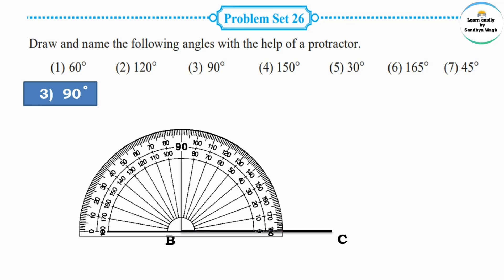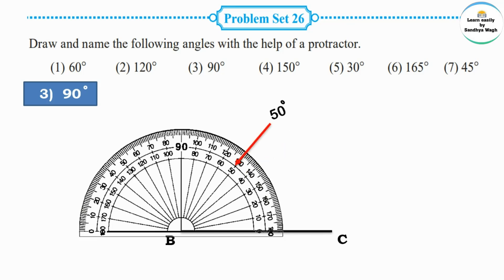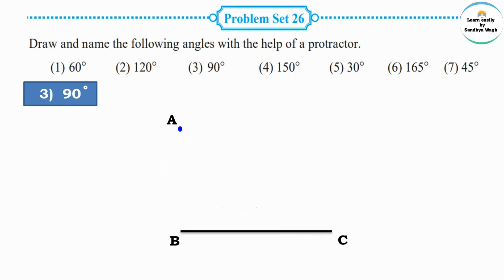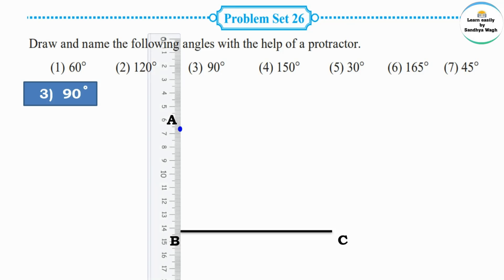Counting from 0 on the right side: 0 degrees, 10 degrees, 20 degrees, 30 degrees, 40 degrees, 50 degrees, 60 degrees, 70 degrees, 80 degrees, and 90 degrees. This is the 90 degree marking. Mark a point here and name that point A.